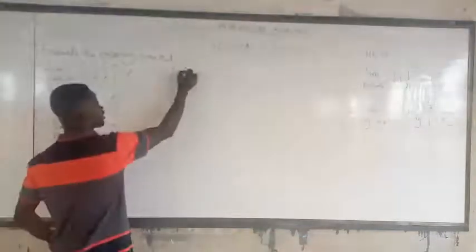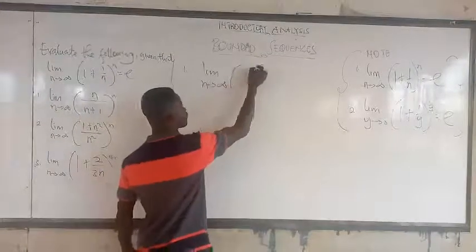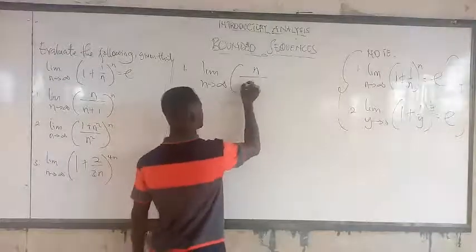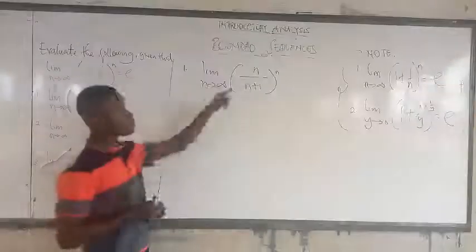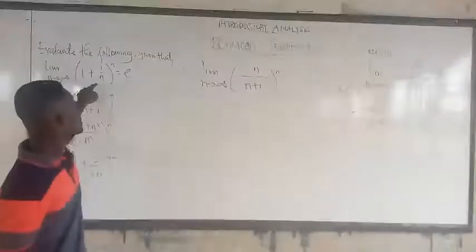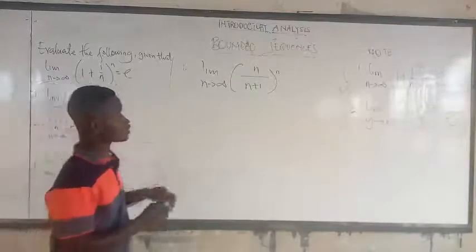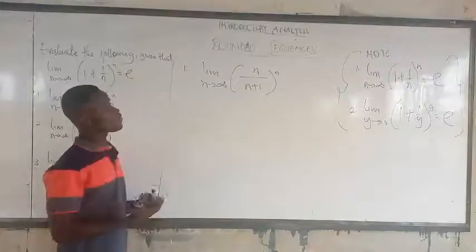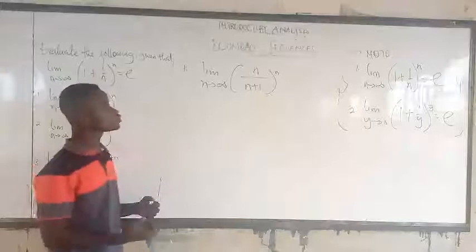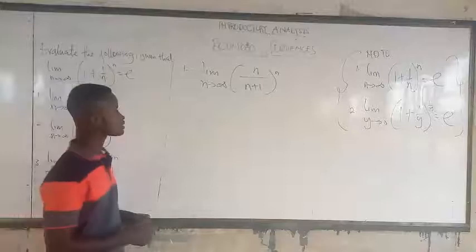Now we are evaluating the following: given that formula, we have to evaluate these limits. For the first one, we have the limit as n approaches infinity of n over n plus 1, all to the power n. Please remember that this is not the same as the standard form — check the inside, they are not the same. So don't say it's just equal to e. We are going to make it be like that now.